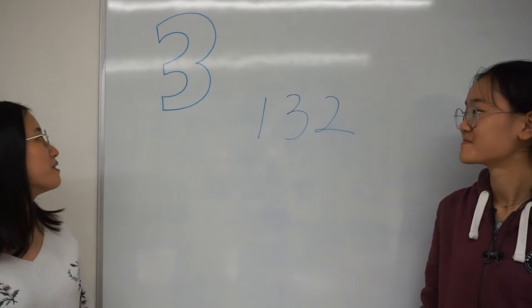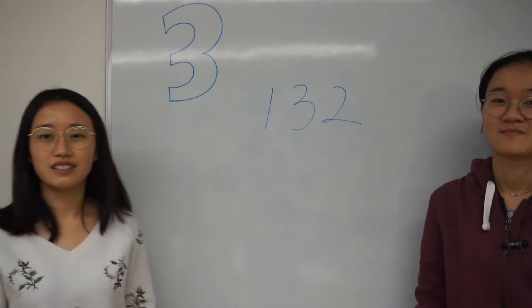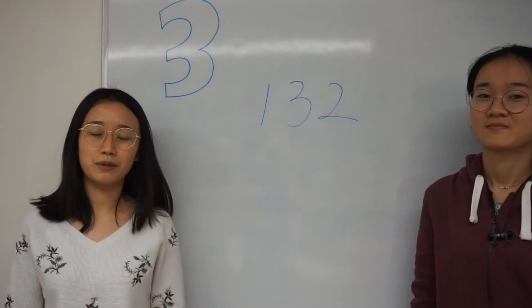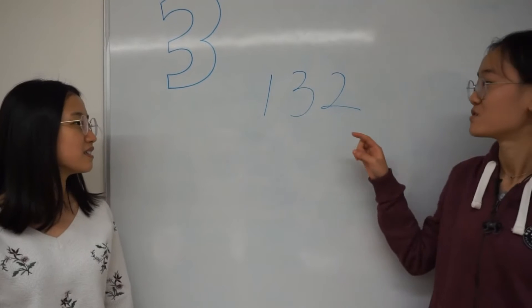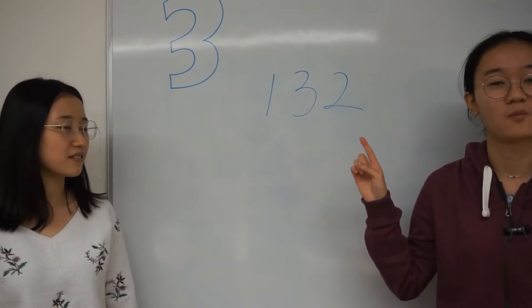If a number is divisible by 3, the sum of the digits is divisible by 3. For example, 1 plus 3 plus 2 is equal to 6, so 132 is divisible by 3.